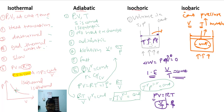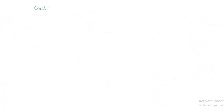For the equation of state of an isobaric process, starting from PV = RT, we get V/T = R/P. Since pressure is constant, V/T = constant is the equation of state for an isobaric process.